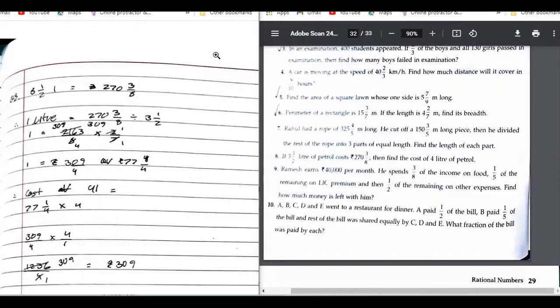Now let us move on to question number eight. If three and a half liters of petrol cost rupees 273 by 8, then find the cost of four liters. Can you tell me the procedure you have followed? First, using the unitary method, we have to find the cost of one liter and then we multiply that by four.